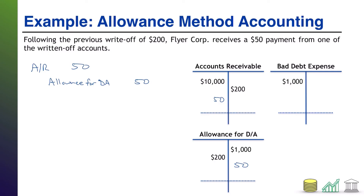The reason is because we still assumed $1,000 wasn't going to get paid — it just turns out that the $50 we thought wasn't going to get paid actually did get paid. Our overarching assumption is that at the end of the day there's still going to be $1,000 that we don't think we're going to get paid, based on historical trends in our collections, the riskiness of our customers, and various other factors.